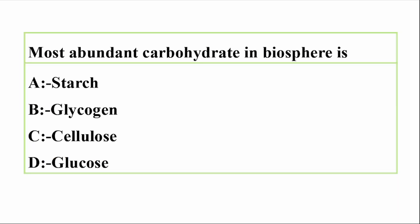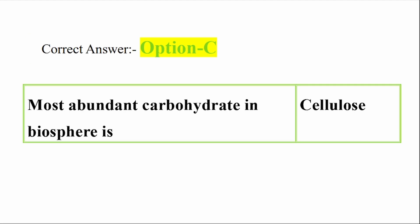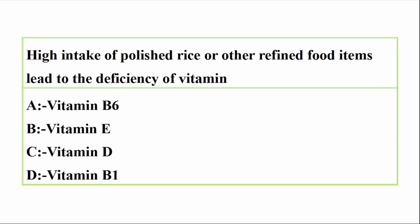Question: Most abundant carbohydrate in the biosphere is? Options: A. Starch, B. Glycogen, C. Cellulose, D. Glucose. Correct answer: Option C, Cellulose. Cellulose is the most abundant carbohydrate in the biosphere.